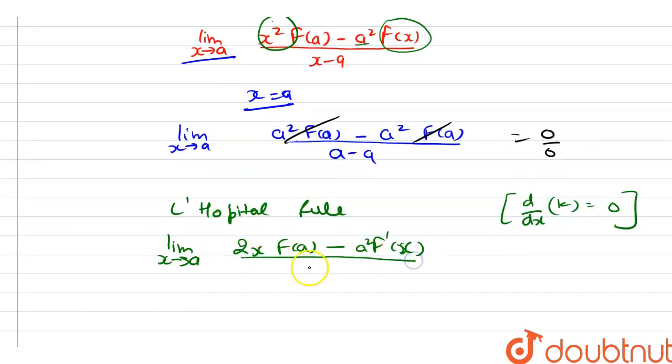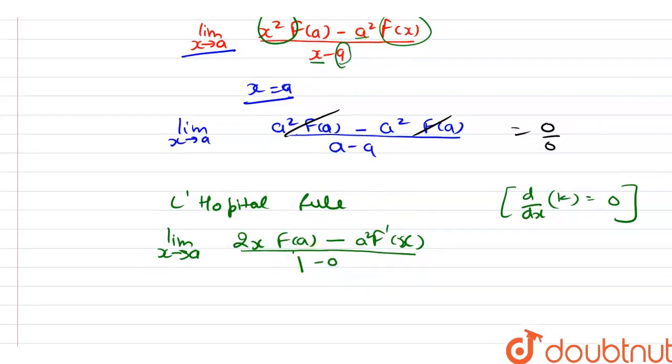And as we know that the differentiation of any constant k is 0, divided by the differentiation of x here will be 1 minus 0 because the differentiation of a is 0 because it is a constant.